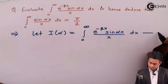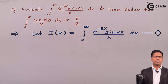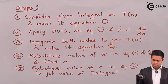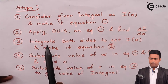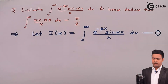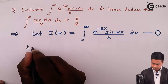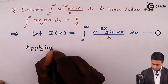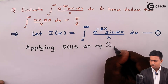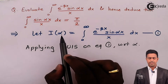We will make this equation number one, and to get the value by the rule of DUIS we will follow certain steps. Step one is done. Now we'll apply DUIS on equation number one with respect to alpha, because we have considered alpha as our parameter.